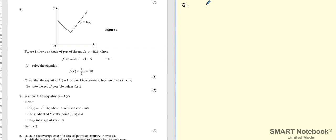So f(x) equals 2 modulus of 3 minus x plus 5 and we've got that the domain is x is greater than or equal to 0.